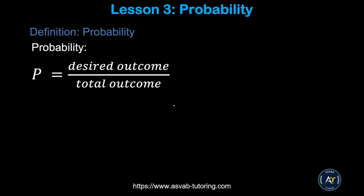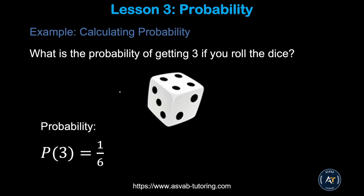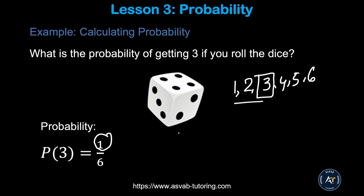The next thing we'll learn is Probability, which is also a very common topic on the officer candidate test — you might see a couple of problems based on that. Probability is defined as desired outcome over total outcomes. Let's apply this concept: say you are rolling a die, which has six sides numbered 1 through 6. What is the probability of getting a 3? There is only one 3, and there are 6 total outcomes, so the probability of getting a 3 is 1 out of 6.